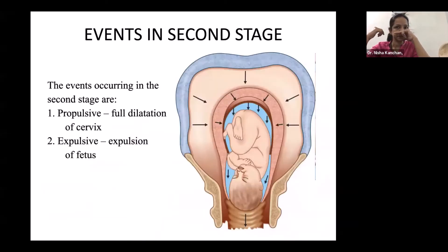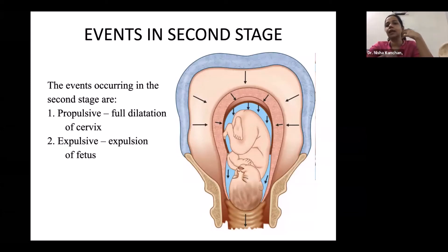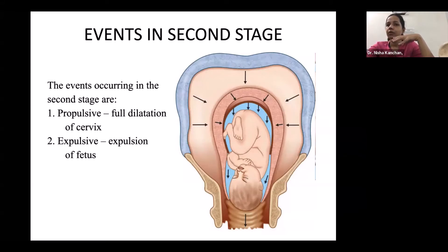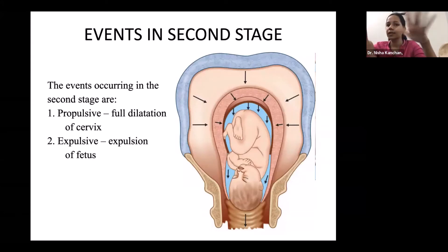The second stage of labor has two phases: propulsive and expulsive. The propulsive phase is from full dilatation of the cervix until the baby's head reaches the pelvic floor. The expulsive phase begins when the head touches the pelvic floor, stimulating nerves through the Ferguson reflex, causing the mother to feel the urge to bear down. The propulsive phase corresponds to descent to the pelvic floor; the expulsive phase corresponds to the mother's bearing-down efforts.